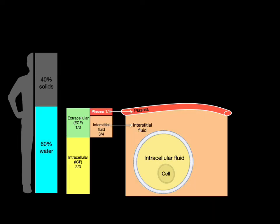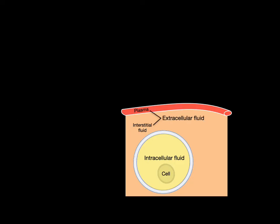Plasma is one-quarter. Interstitial fluid is three-quarters of the one-third. And the intracellular fluid makes up the other two-thirds.